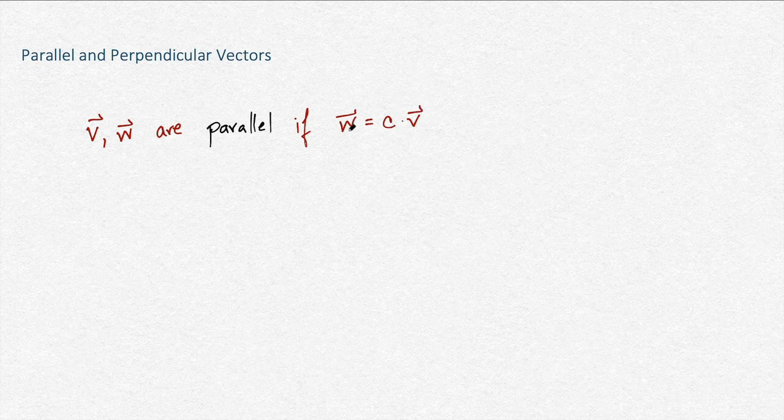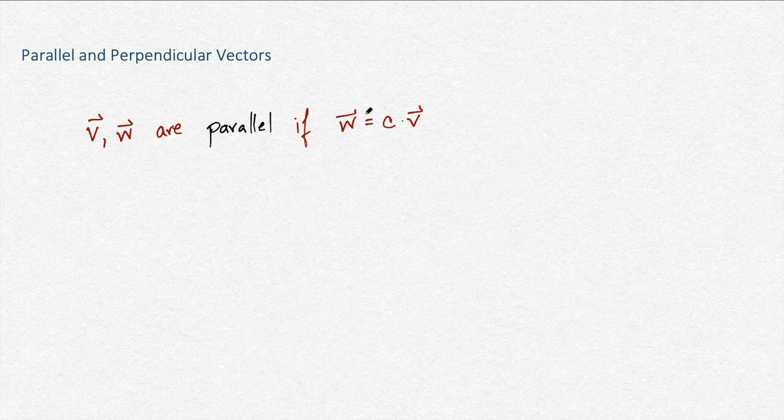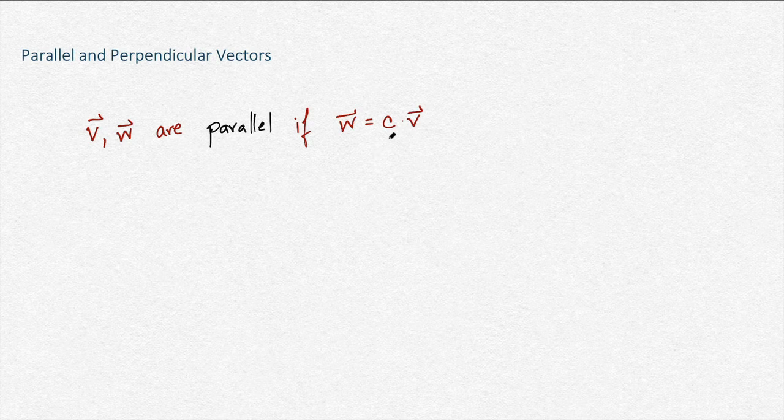If C is 0, then W would be the 0 vector. We're not going to say that that's parallel to anything. That would be kind of silly. So that's our definition of parallel.